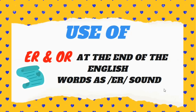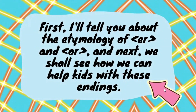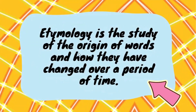Before we move any further, let me tell you how this video will work. First I'll tell you about the etymology of ER and OR, and next we shall see how we can help kids with these endings. If you don't know what etymology is, etymology is the study of the origin of words and how they have changed over a period of time. To learn English spelling rules, this is something that really needs to be learned as well.